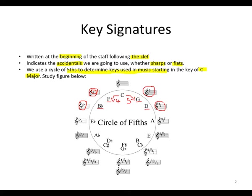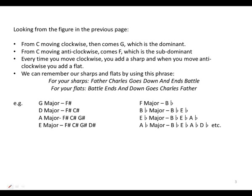That's how the cycle of fifths works. Clockwise, we count five times; anti-clockwise, we count four times so that we can determine the next key. Noticing from the figure, when we move from C clockwise, we get to G, and it is the dominant of C major. We move from C anti-clockwise, we get to F, which is the sub-dominant. Remember our terms. Every time we move clockwise, you add a sharp, and when we move anti-clockwise, we add a flat.